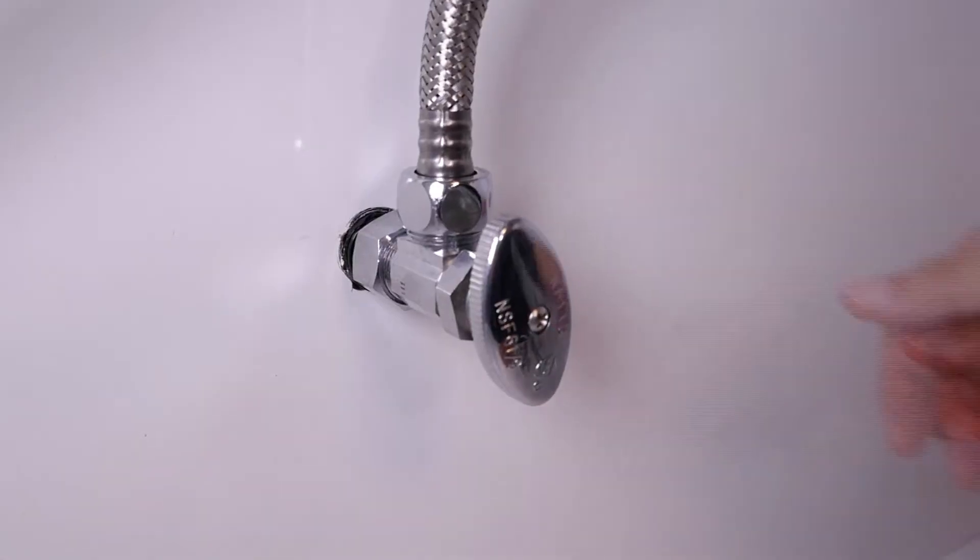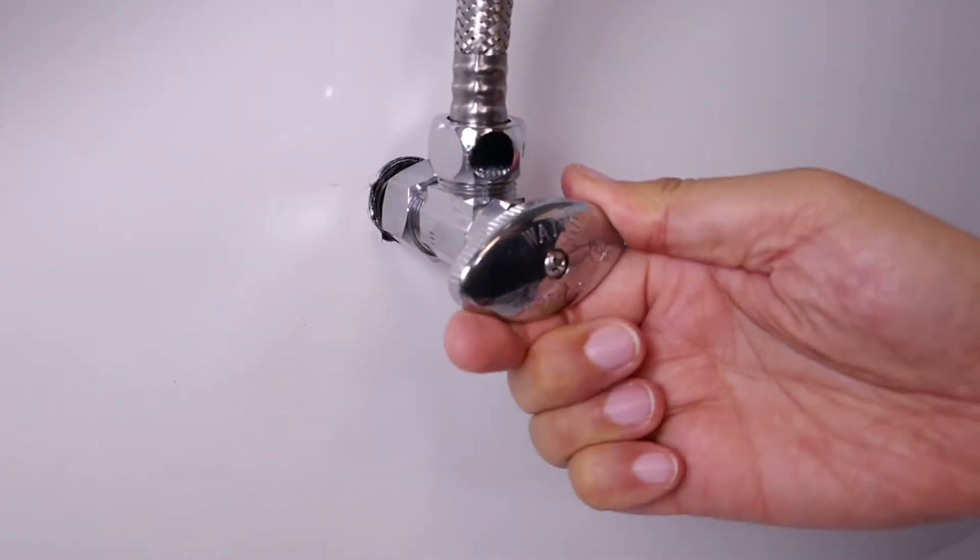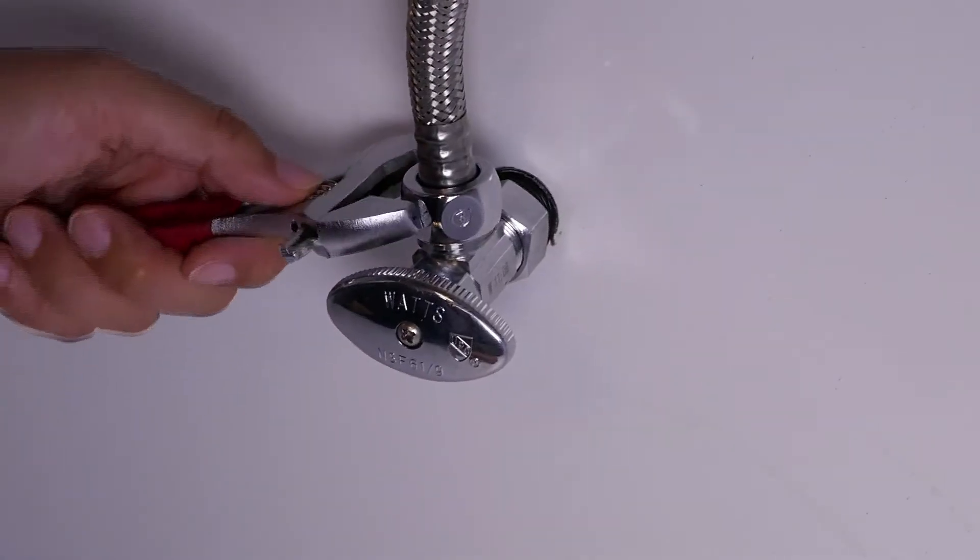Under the sink, you will find the cold water valve. Make sure you close this valve all the way and check that the cold water is turned off.